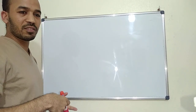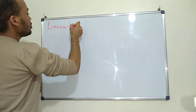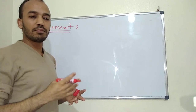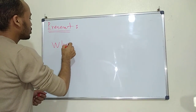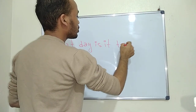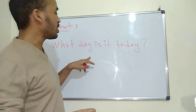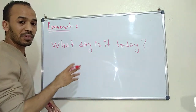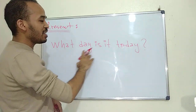Firstly, I'm going to talk about the present. Whenever we want to ask about the day, we pose a question. Pay attention that always when we pose a question, we have a question mark at the end. So the question will be like this: 'What day is it today?' — a W-H question.